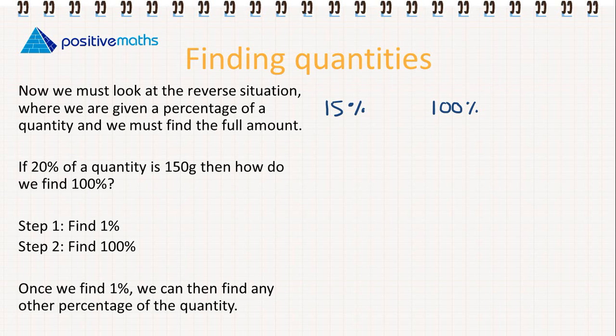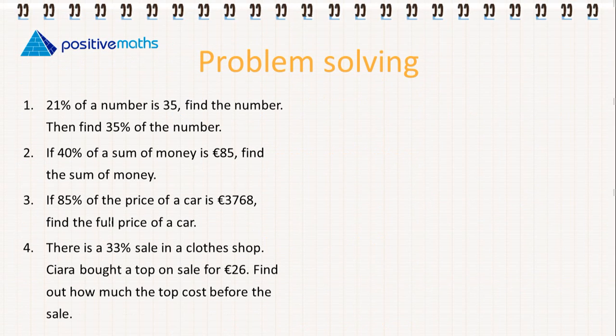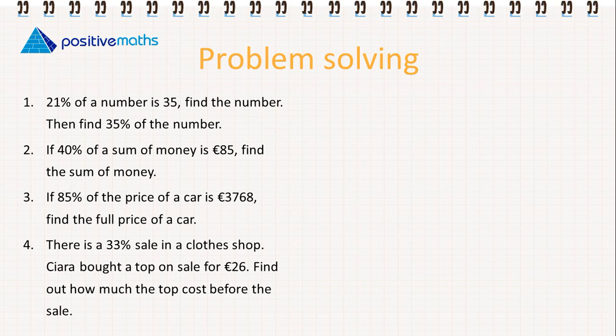If 20% of a quantity is 150 grams, then how do we find 100%? We follow these two steps. We first find 1%, then we can find 100%. Once we find 1%, we can find any other percentage of the quantity. Let's look at some problems.